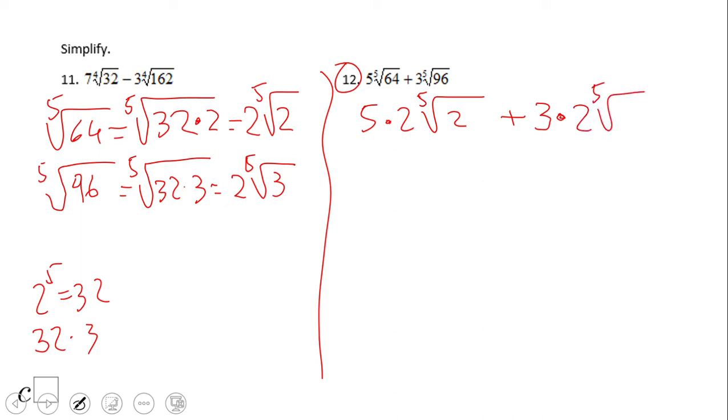What? The radicals are different, right? We have fifth root of 2, fifth root of 3. So that tells us that it cannot be combined, but we can do more simplification.